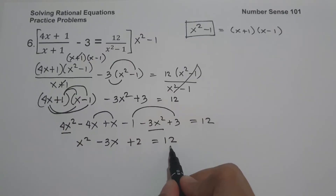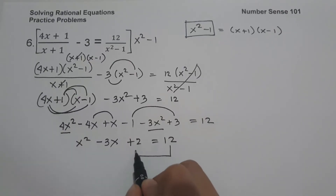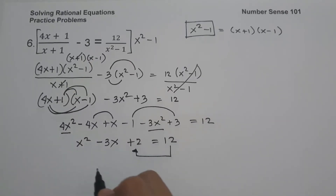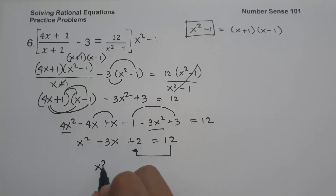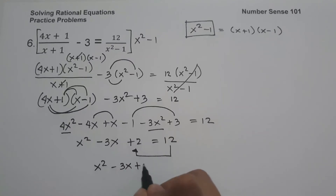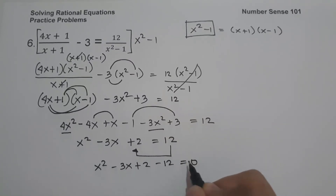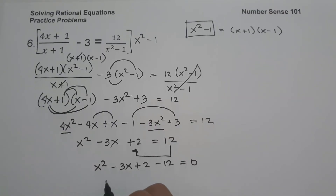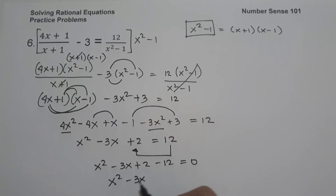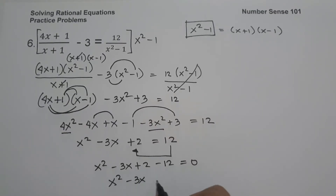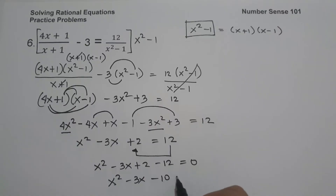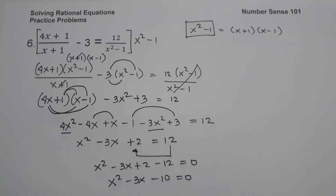Combining like terms: 4x squared minus 3x squared is x squared, and negative 4x plus x is negative 3x, and negative 1 plus 3 is positive 2, equals 12. Moving 12 to the other side gives x squared minus 3x plus 2 minus 12 equals 0. Simplifying, we have x squared minus 3x minus 10 equals 0.